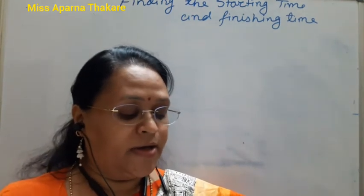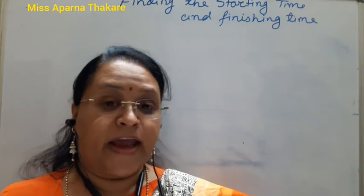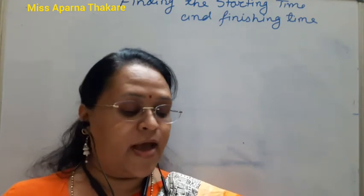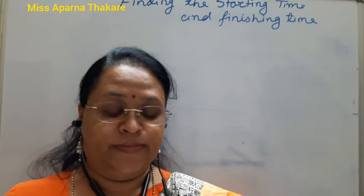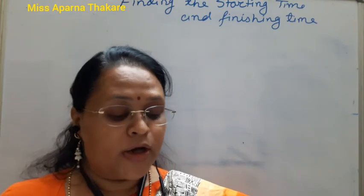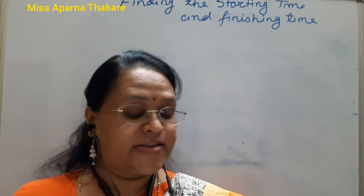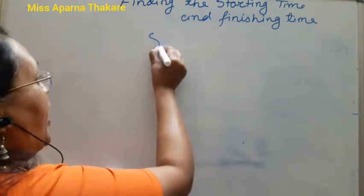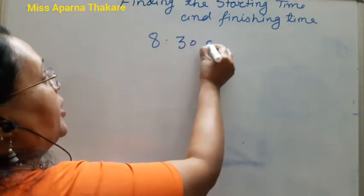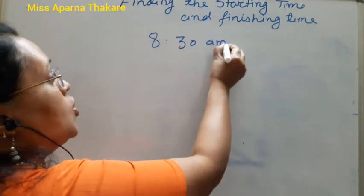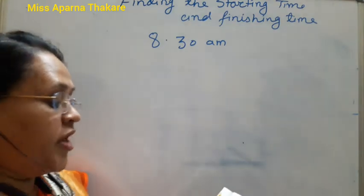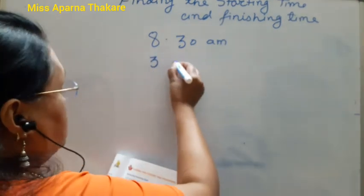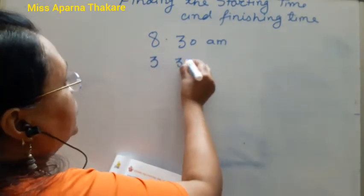The first problem: Ajay started collecting dabbas at 8:30 AM. He finished 3 hours 32 minutes later. What time did he finish? So Ajay started collecting dabbas at 8:30 AM in the morning and he finished his work in 3 hours 32 minutes.